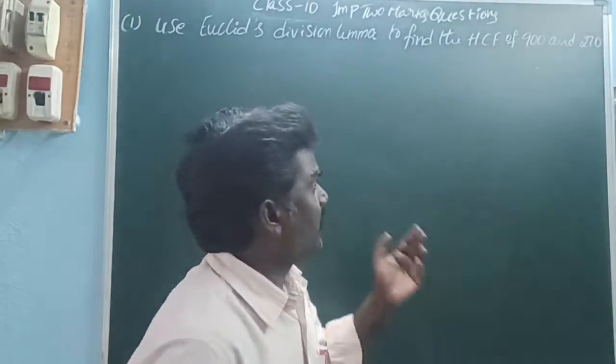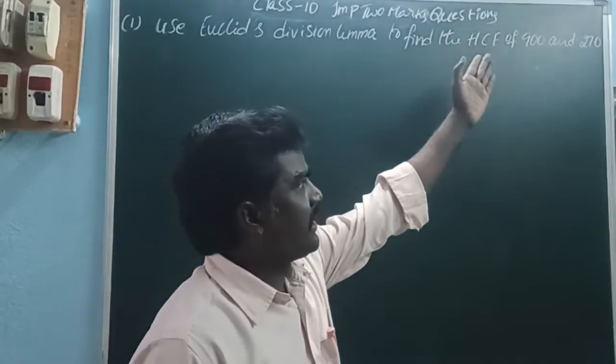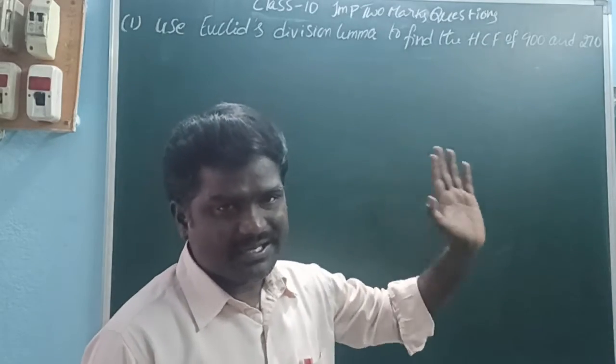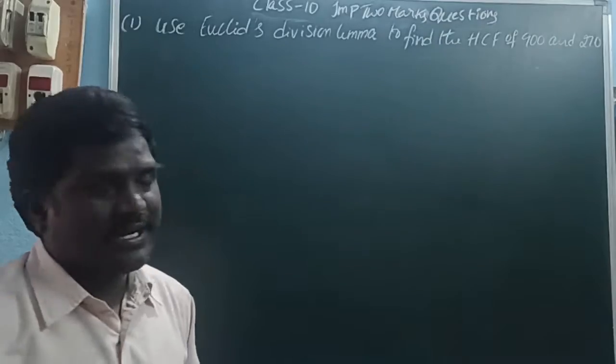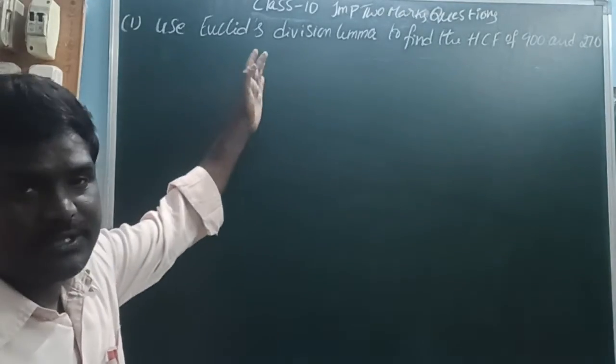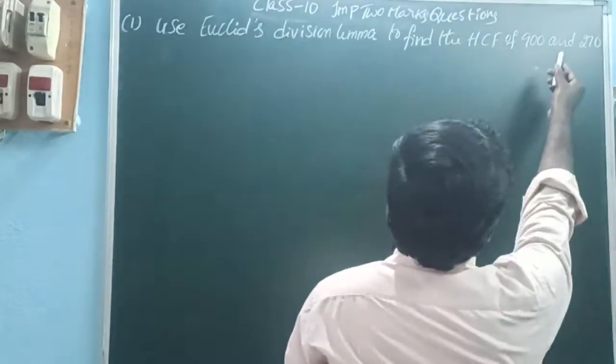Give a like and comment. So here, HCF of 900 and 270. HCF means highest common factor. To find HCF between 900 and 270 by using Euclid's division lemma.